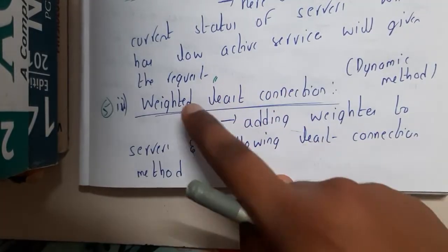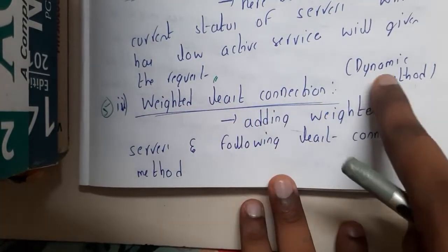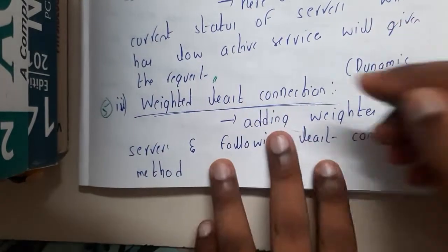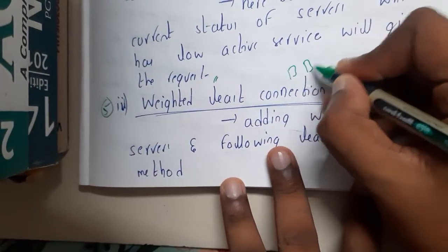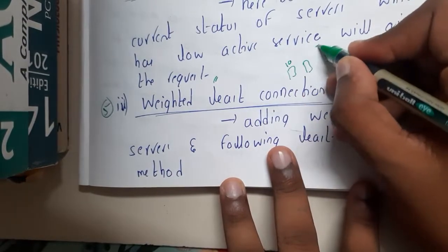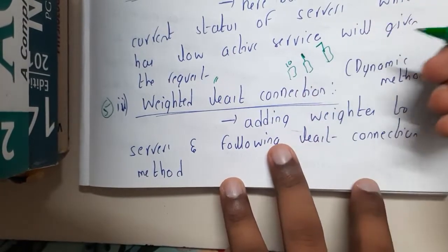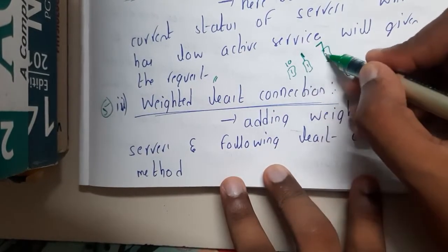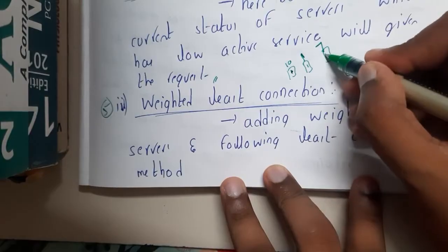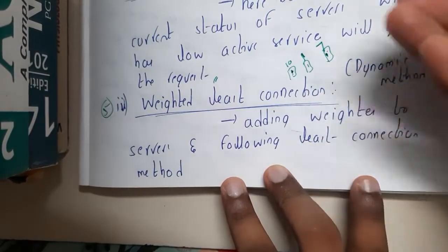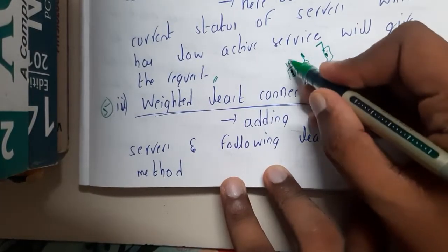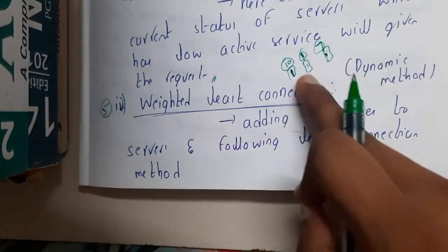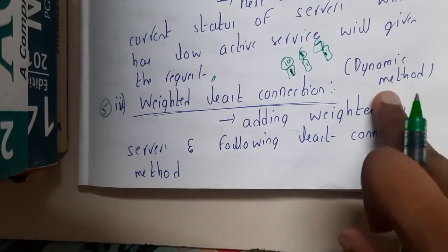The next algorithm is weighted least connection — it is also a dynamic method. Basically, along with checking least connections, you assign some weights to those servers. For example, this server has weight 10, this one weight 7, and this one weight 1. Whenever a request comes in and two servers are free, you assign it to the server with the highest weight because it has the highest priority. So along with weights and least connections, this is a dynamic method.